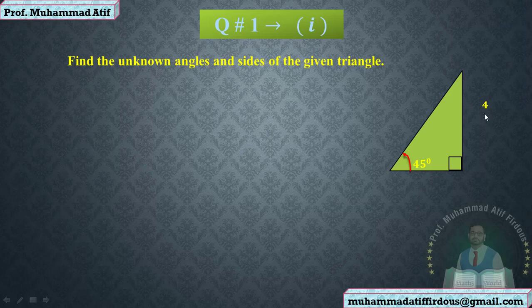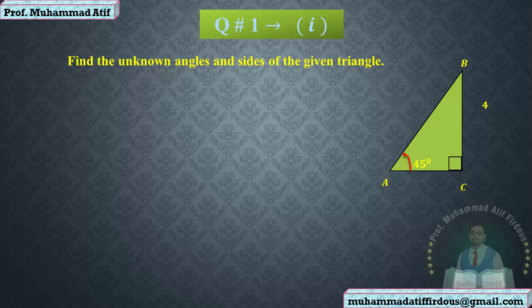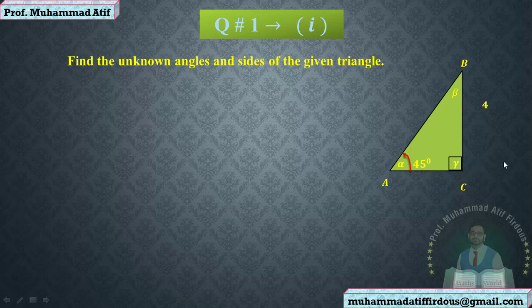First, understand the question. In this triangle you can give any name you like. I am naming the vertices A, B, C. You can name any vertex whatever you want. If the vertex is A, the angle will be alpha; if B, the angle will be beta; if C, the angle will be gamma. So for every question we will use alpha, beta, gamma for the angles.